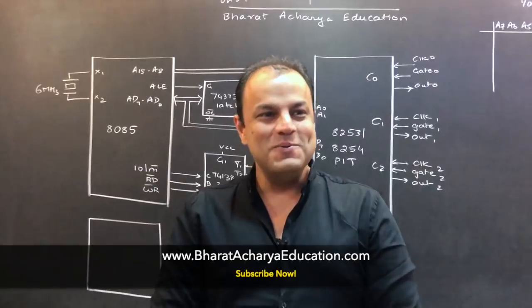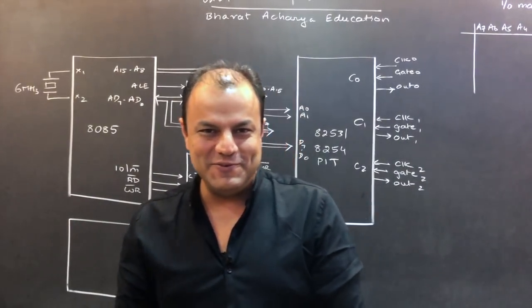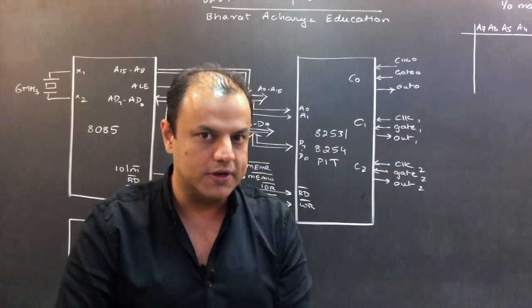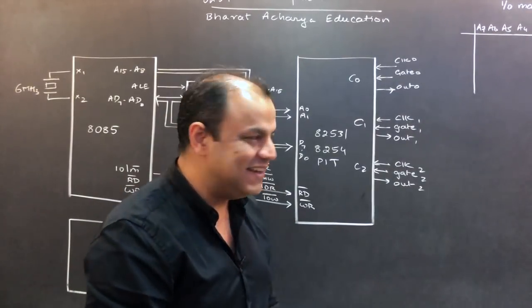Before I start, what are these chips used for? What is 8254 used for? It's a Programmable Interval Timer. So what can you do with it? So much. It is used to produce delays.